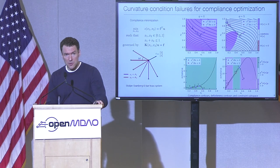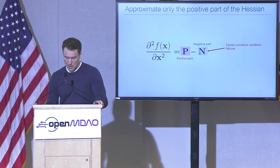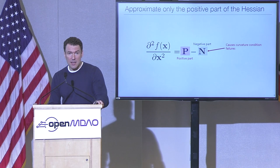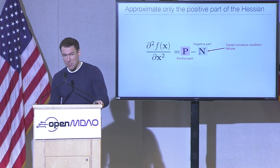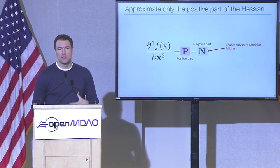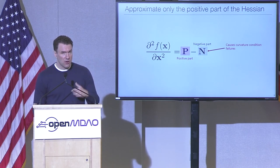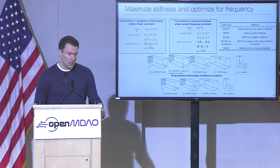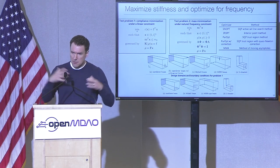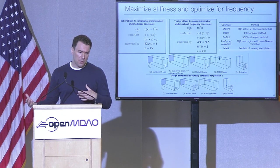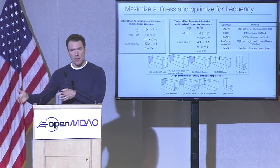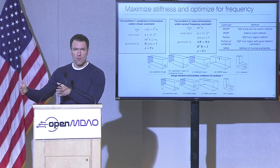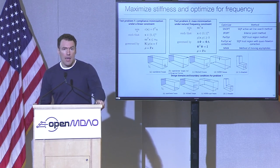To alleviate this problem, we identified that the Hessian in this case can be split between a positive part and a negative part. That negative part is responsible for the curvature condition failures. So we basically add back in this negative part correction and approximate only the positive part P. In our optimization algorithm, instead of using the full Hessian, we use only the positive part. This works both for compliance/stiffness maximization objectives and for minimizing mass with a frequency constraint, across a large number of problems.